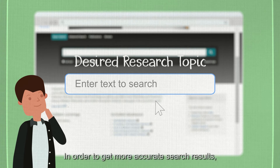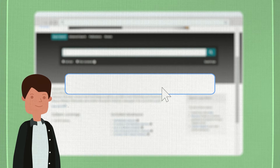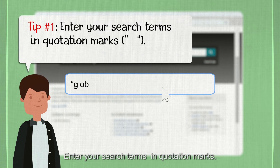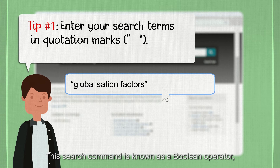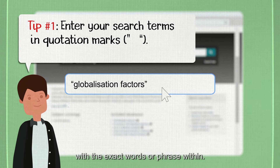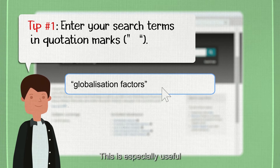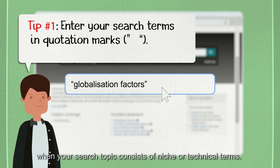In order to get more accurate search results, here are a couple of useful tips. Enter your search term in quotation marks. This search command is known as a Boolean operator, and the database will give you results with the exact words or phrase within. This is especially useful when your search topic consists of niche or technical terms.